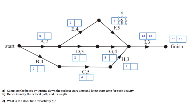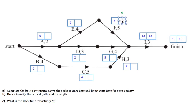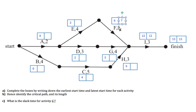Activity F needs to finish in time for I to start at 12 — that's the latest possible time I can start. Activity F takes five, and it needs to finish by 12, so the latest possible time it can start is 7. You can think of that as 12 take away 5 giving you 7. Checking forward: if it starts at 7 and takes 5, it will still finish by 12.